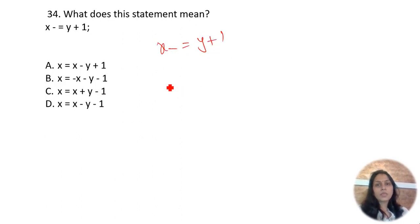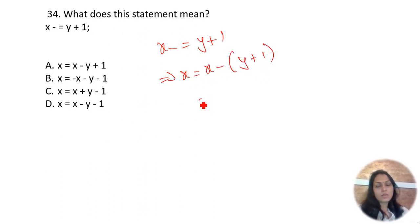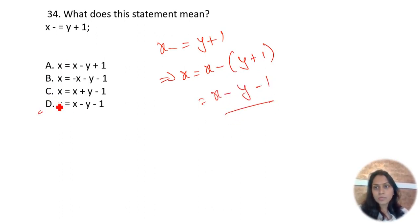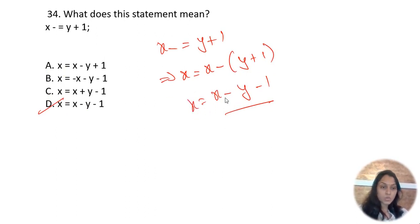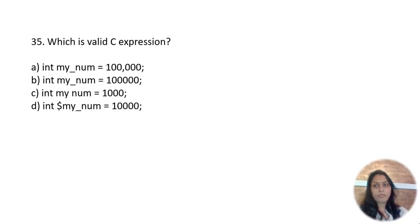What does the statement 'x -= y+1' mean? It is nothing but x = x - (y+1), which equals x = x - y - 1. So option D is the answer: x = x - y - 1.